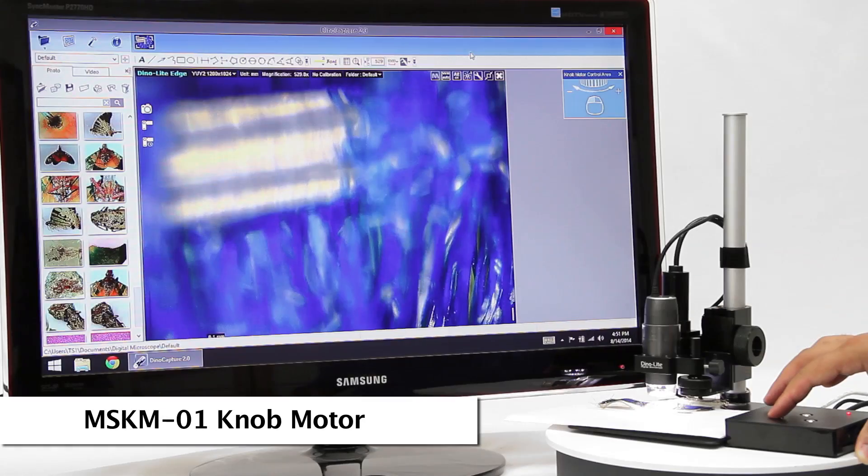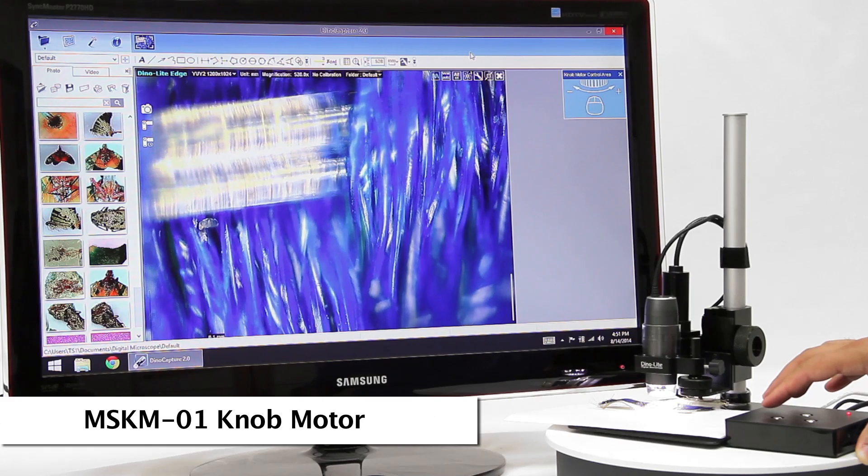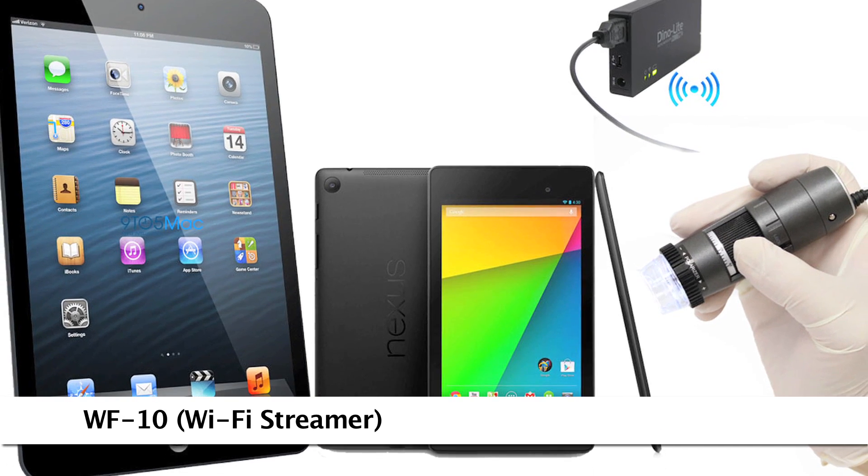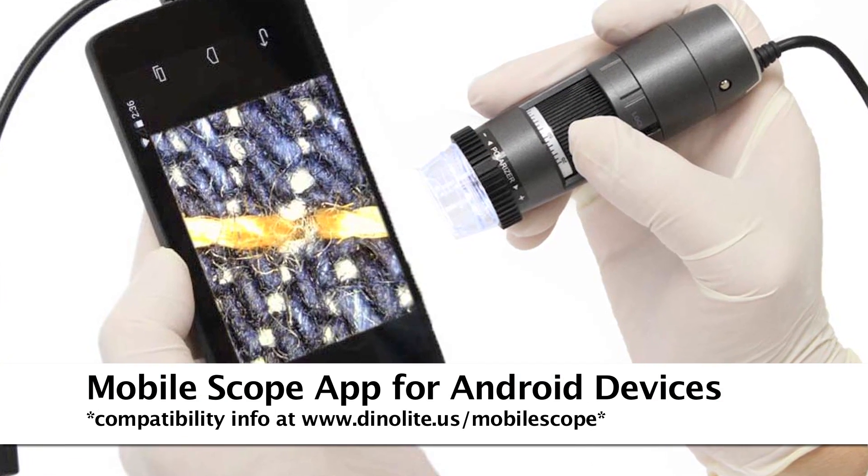The DynoLight knob motor provides remote controlled precise movement which is very helpful for viewing at higher magnifications. There are also options for mobile viewing including a Wi-Fi adapter and a direct connect option to compatible Android devices.